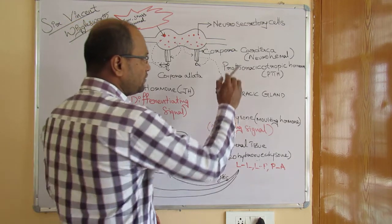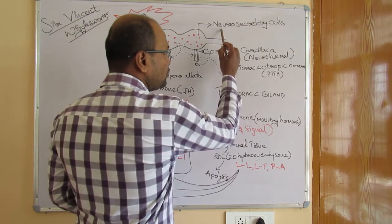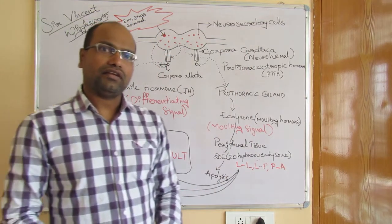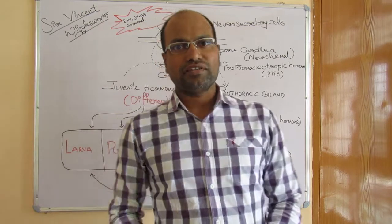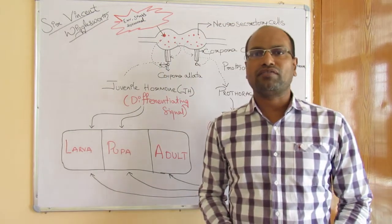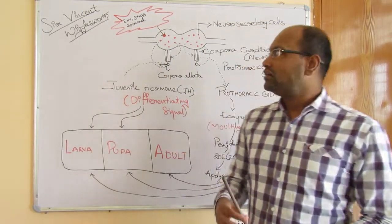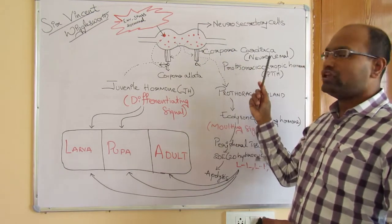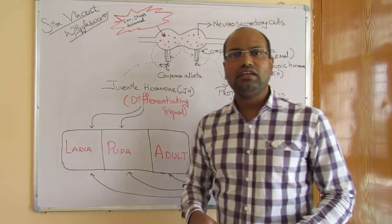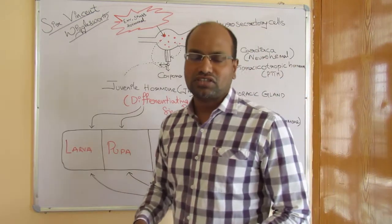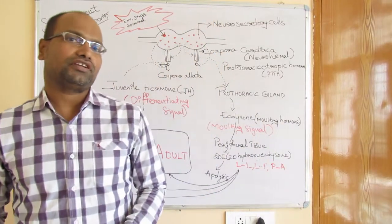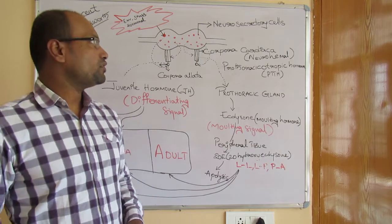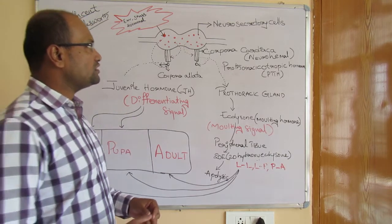These hormones are produced at different places in the brain region. There are cells in the brain called neurosecretory cells. Apart from endocrine glands, there are basically three types of structures: neurosecretory cells, endocrine glands, and neurohaemal glands. These three structures are responsible for producing the hormones involved in metamorphosis.